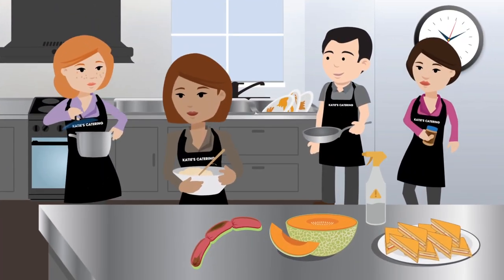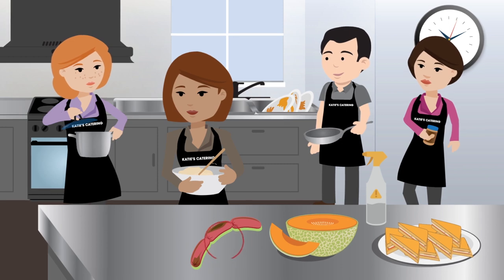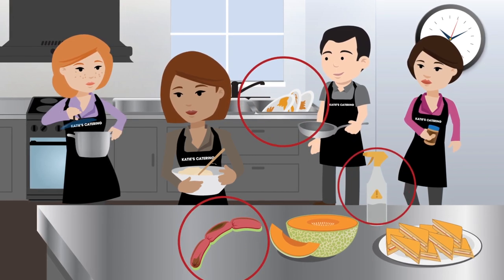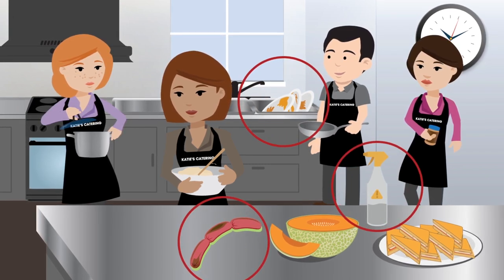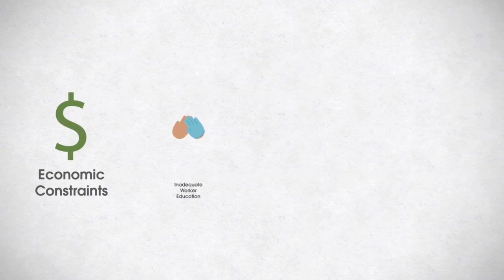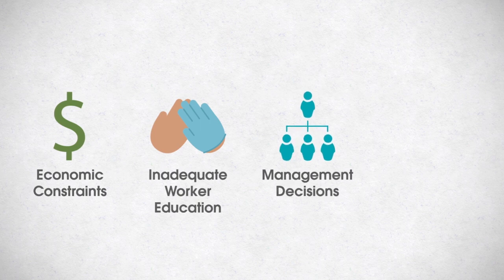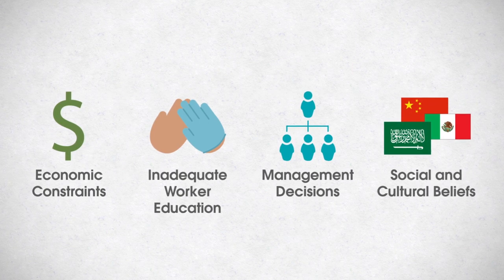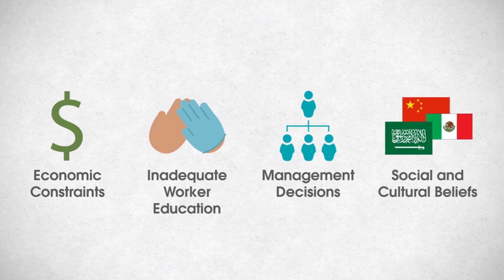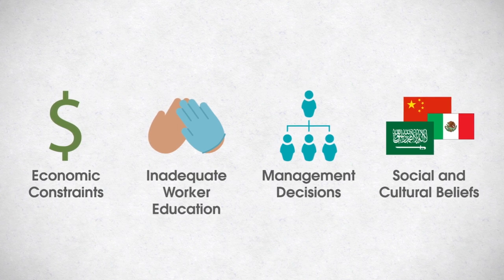Environmental antecedents are the root cause or circumstances that set the stage for contributing factors to occur. Examples of environmental antecedents include economic constraints, inadequate worker education, management decisions, and social and cultural beliefs. Environmental health professionals should attempt to identify contributing factors and environmental antecedents during environmental assessments.